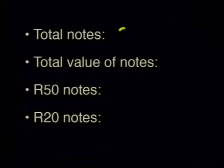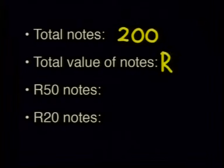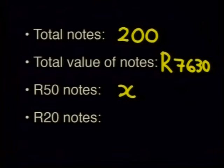The total number of notes is 200. Remember that this includes both 50 rand and 20 rand notes. The total value of the notes is 7,630. We don't know the number of 50 rand or 20 rand notes, so we'll use letters to represent these unknowns. Let's say the number of 50 rand notes is x and the number of 20 rand notes is y.